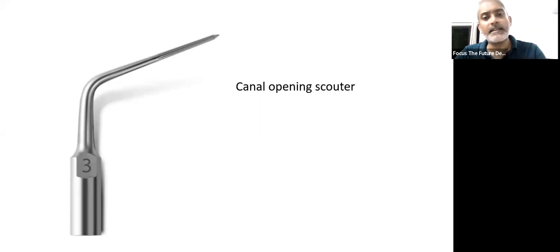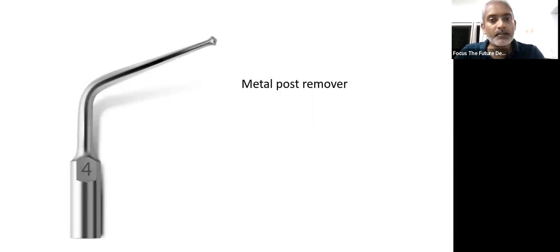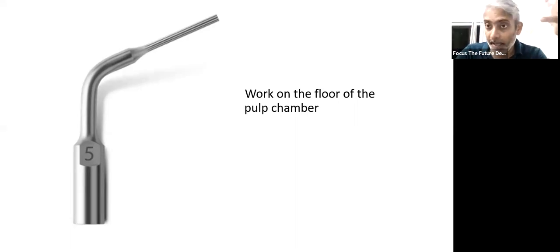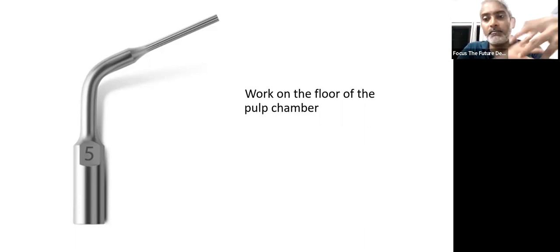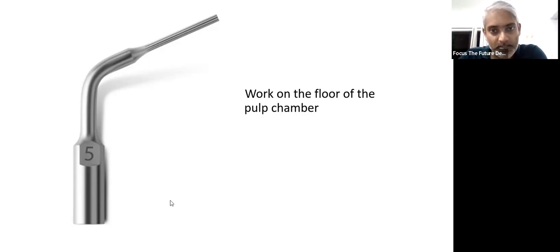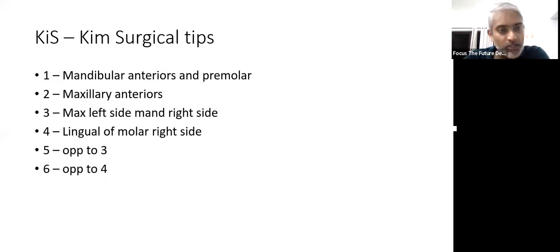These are certain latest questions. In addition to that, we will be dealing with some traditional questions also. StarTex number 3 is a canal opening scouter. Then you have the metal post remover. StarTex number 5 is used to work on the floor of the pulp chamber. All these things can be used for endodontic preparation. Ultrasonics are used after access preparation before entering into the pulp chamber — if you have calcifications, if you need to remove a post, or if you need to explore without getting perforated. These ultrasonic instruments are highly useful because you get very good control of them.